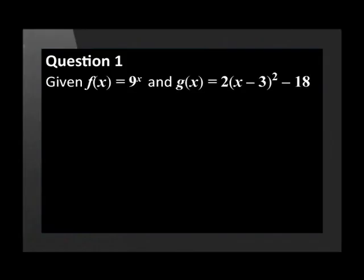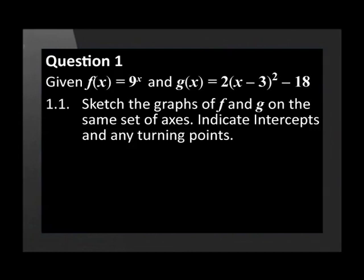Given f(x) is equal to 9 to the exponent x and g(x) is equal to 2(x minus 3) squared minus 18. Sketch the graphs of f and g on the same set of axes. Indicate intercepts and any turning points.